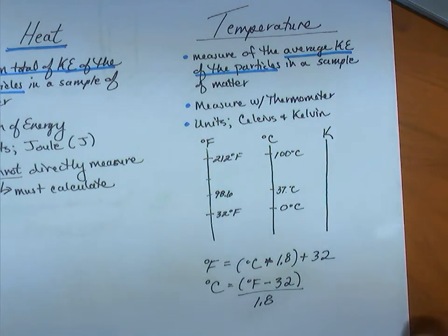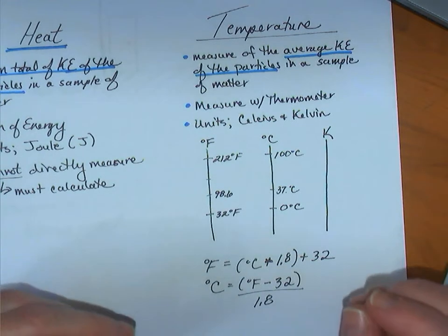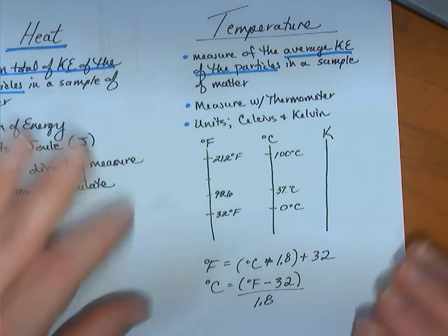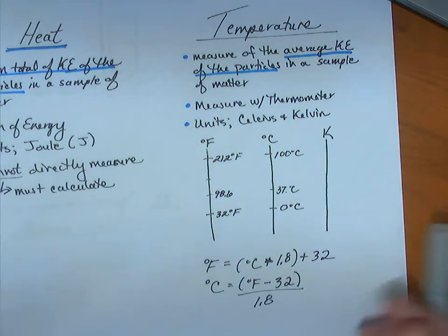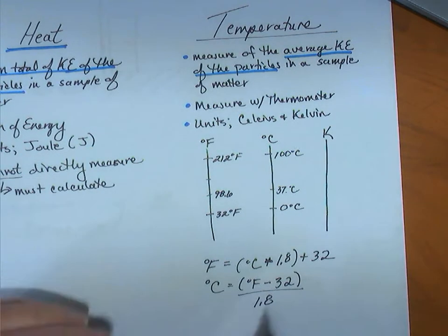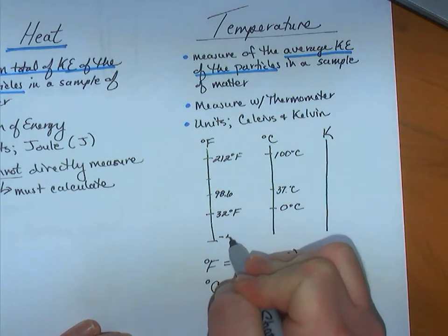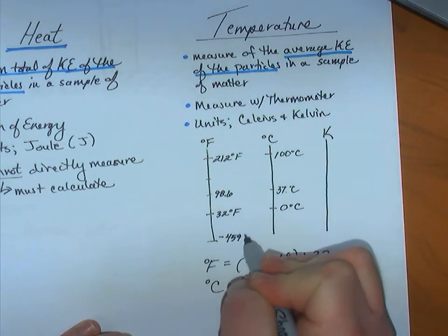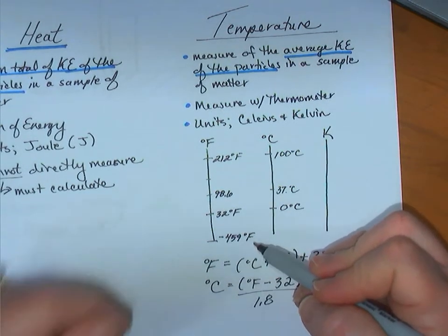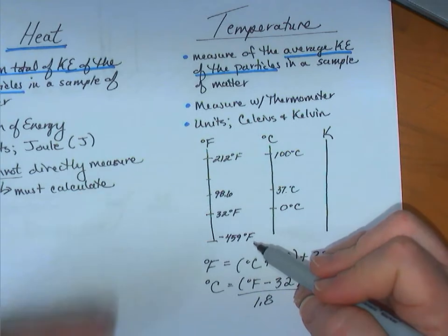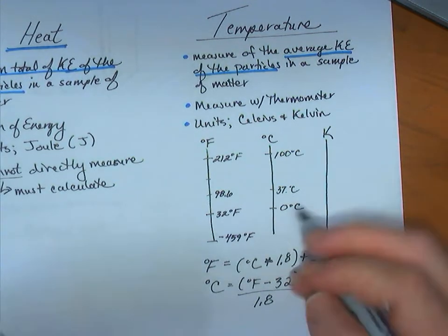We'll talk about this later, but it was actually through experimentation with gases that the coldest possible temperature was theorized. It was predicted that a gas would have zero volume at a temperature of negative 459 degrees Fahrenheit. Now, we define this as absolute zero. The temperature at which matter has no kinetic energy.